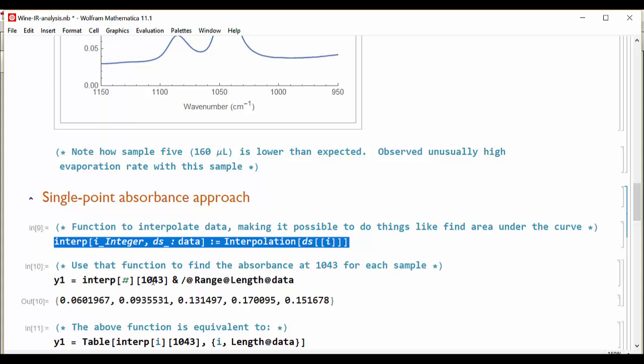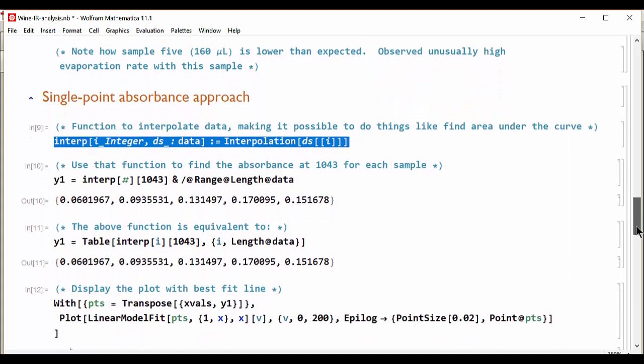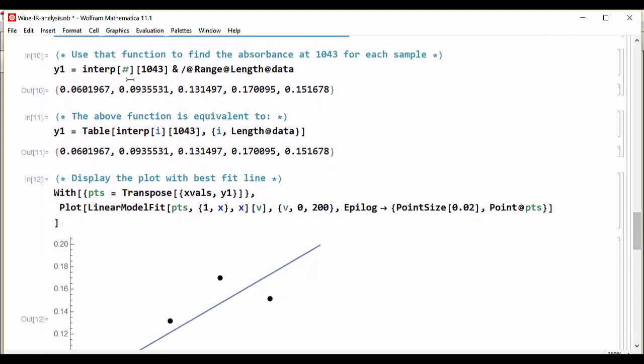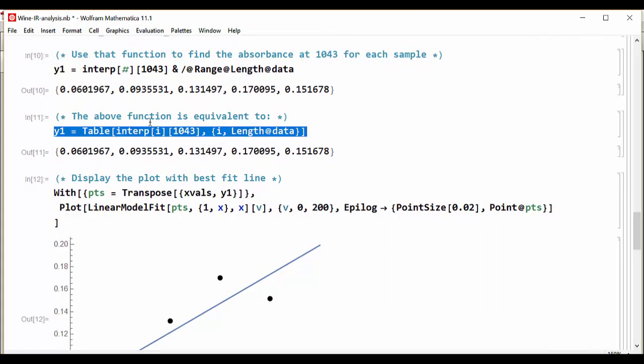For right now, I can just take this interpolation function and use any of the data sets one through five and extract the absorbance at 1043 wave numbers and we get those results. That function using the unnamed function is the same as creating a table where we loop over the length of the data set and you see we get the same exact results.